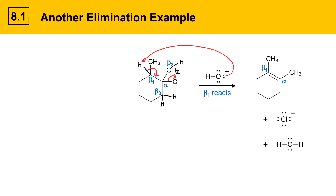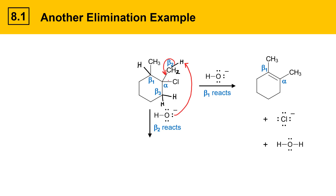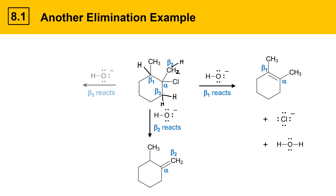With elimination reactions, you always have to think back to substitution reactions and keep in mind what could potentially happen — could the base you're using function as a nucleophile? In this case, the answer is no. If beta 2 reacts, the base plucks off the beta 2 proton, the electrons flow to form a new double bond, and the leaving group leaves, giving a new carbon-carbon double bond between the alpha and beta 2 positions. The final possibility is that the beta 3 position reacts. The base plucks a proton off beta 3, the electrons flow to eliminate the leaving group, and that gives a new carbon-carbon double bond between the alpha and beta 3 positions. This example shows how three different beta positions can all react to give three different alkenes. In the next few slides, we'll learn methods to distinguish which of these would be major and minor products.